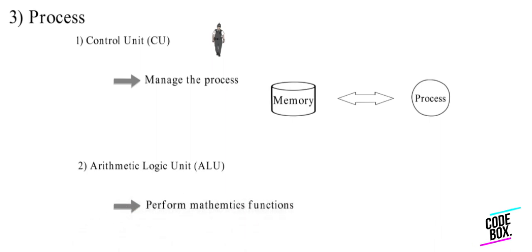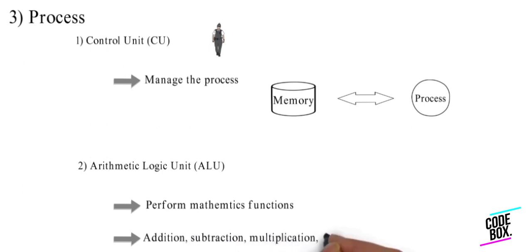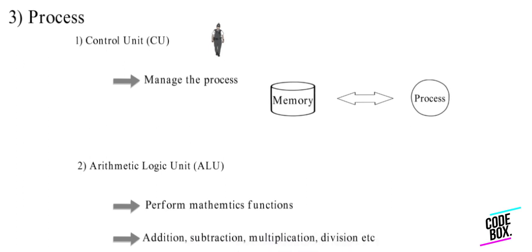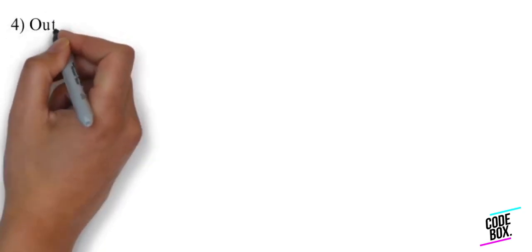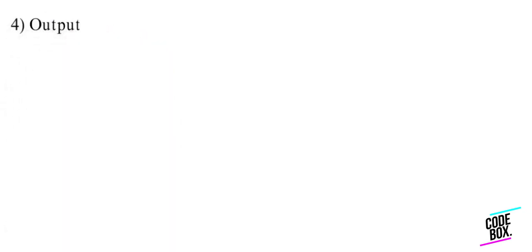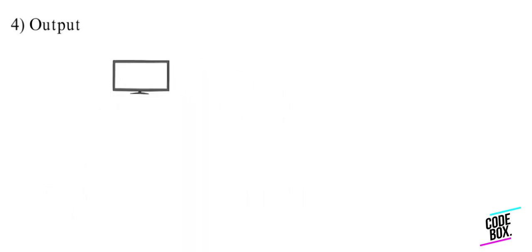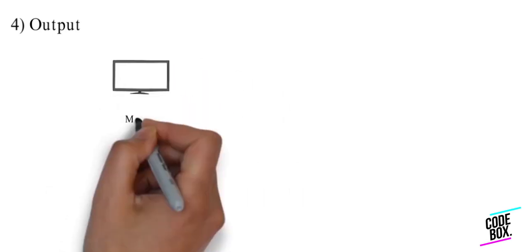The arithmetic logic unit performs subtraction, addition, multiplication, division, and all arithmetic operations. Output devices such as printers and monitors are able to print and display the results.